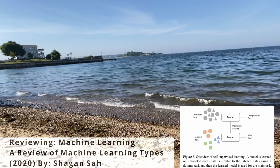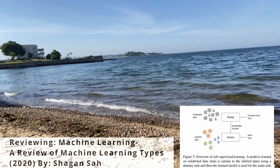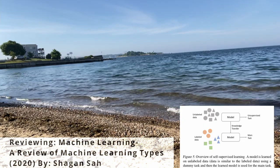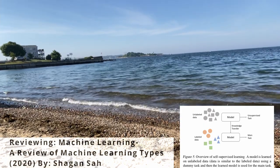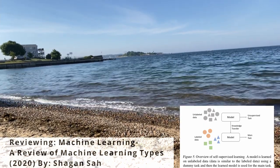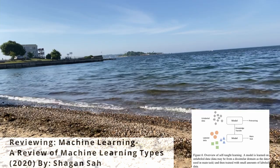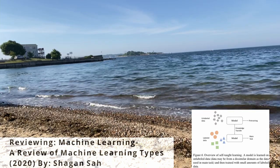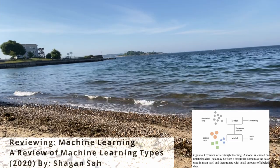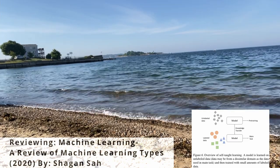Now this is where the article is a little confusing — I kind of wish there was a table that showed how all of these different learning types intermixed, because self-taught learning is yet another type that is similar to the neural networks that we just described.